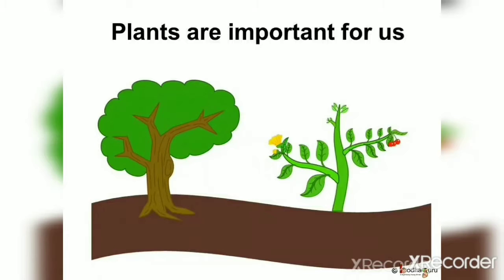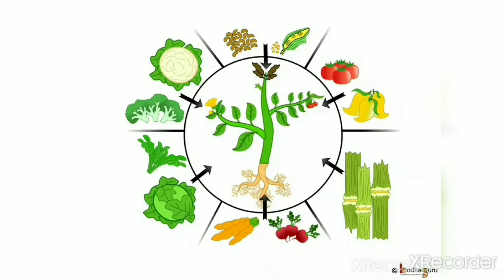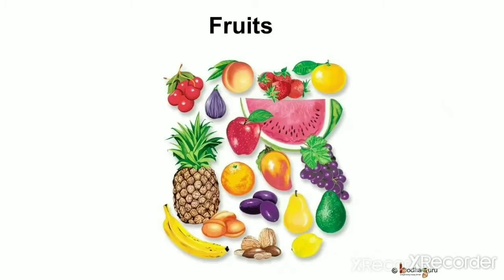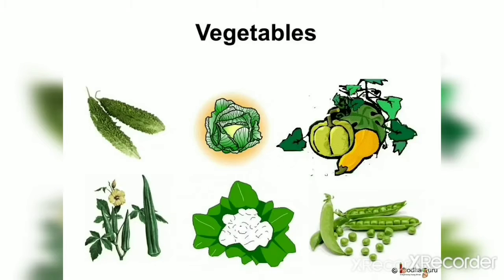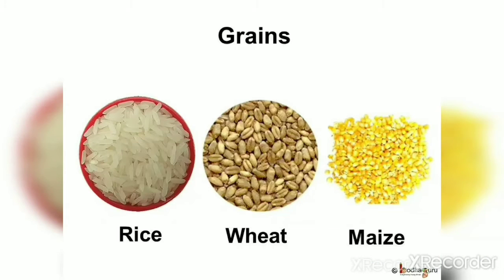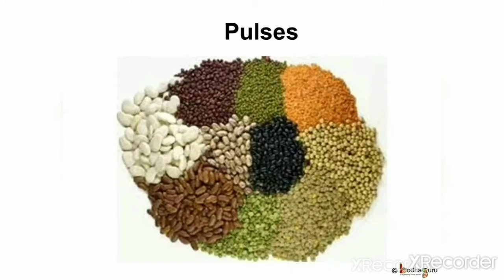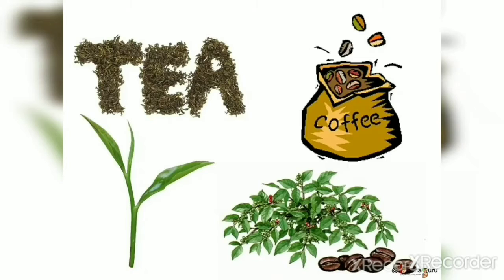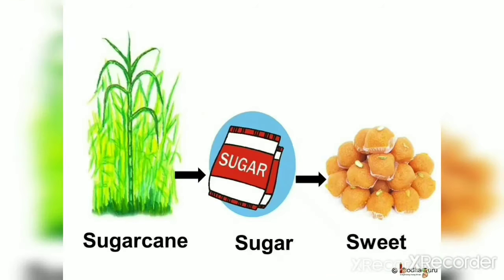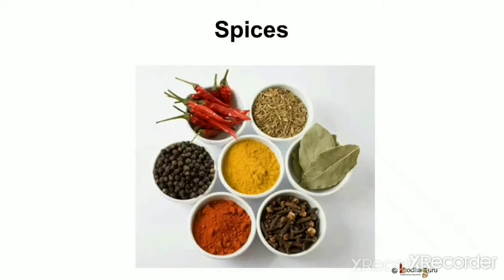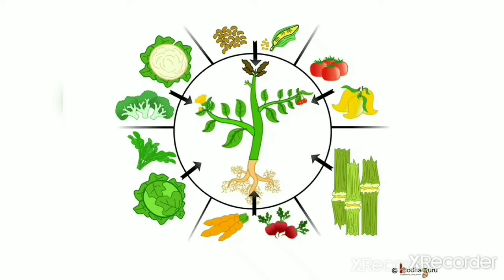Plants are very important for all of us. But do you know why they are important, or how important they are? What all things do plants give us? Most of our food like fruits, vegetables, grains like rice and wheat, pulses like gram and beans, and tea, coffee, sugar and spices — all come from plants. Apart from these, plants are useful to us in many more ways. Let us look at some of these.